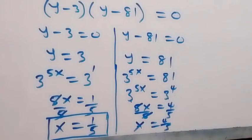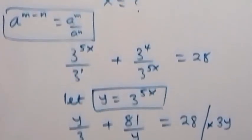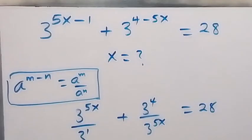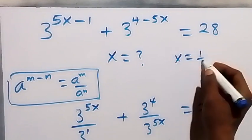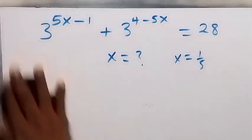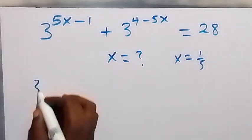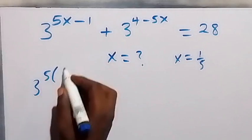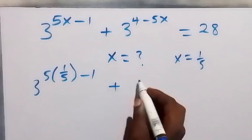To check if these values satisfy the given problem, we substitute each one. For x equals 1 over 5, substituting gives 3 raised to power 5 times 1 over 5, minus 1, plus 3 raised to power 4 minus 5 times 1 over 5.